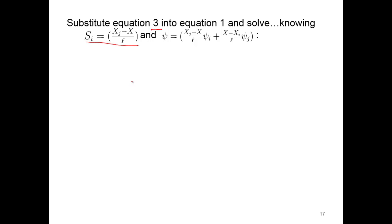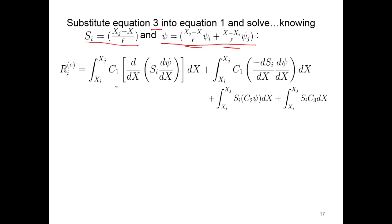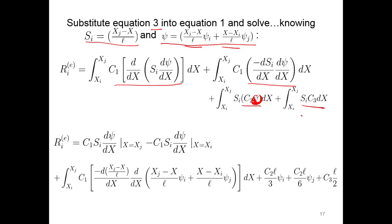So we're going to substitute equation three, which we had on the previous slide at the bottom, into equation one and solve. Knowing that the shape function is defined in terms of the locations of the nodes and the length, and psi is the shape function node i times psi node i plus the shape function node j times psi node j. We can substitute those in, and here is the expansion of that first second-order term, so we have those two terms of the second-order derivative, then the first-order term of psi, and then the third coefficient.